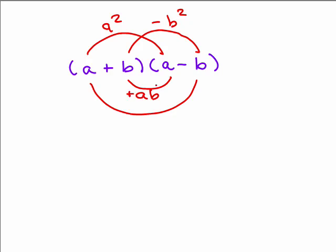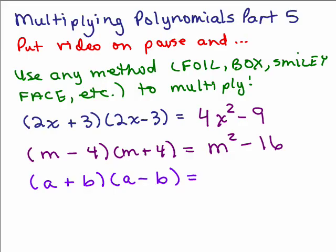And then the outer term is a times -b, it's -ab. So notice these are going to cancel out as well, the ab and the -ab. So I bring down the a². That's going to be plus 0 minus b². So now we can write that one: a² - b².